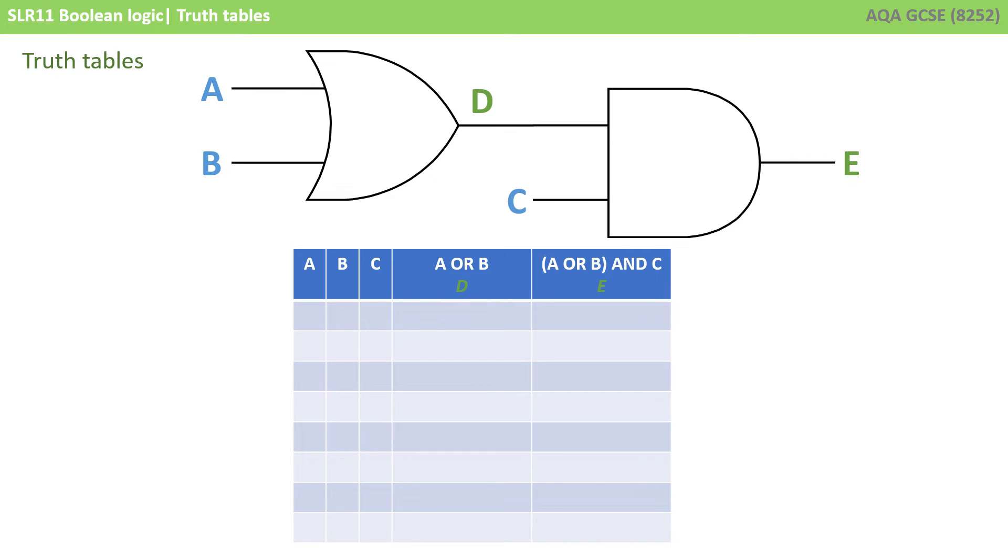But I've got two outputs. I've got the output from the OR gate, which is A or B, and we're going to call that D in green. And then we've got the output from the final AND gate, which is the result of A or B, and the new input from C. So effectively here I've got five columns. Now, the first thing to do is write all the possible combinations for the three original inputs, A, B and C.